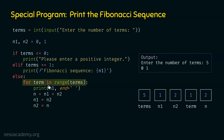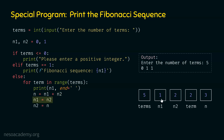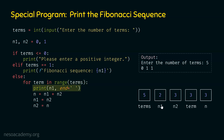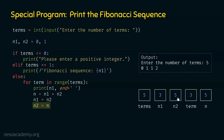In the third iteration, term equals two. n1 is one, so one is printed. n = n1 + n2 equals three, so we get three here. Then n1 = n2 gives n1 equal to two, and n2 = n gives n2 equal to three. In the fourth iteration, term equals three. n1 is two, so two is printed. n1 + n2 equals five because n1 is two and n2 is three, so we get five for n. After updating, n1 is three and n2 is five.